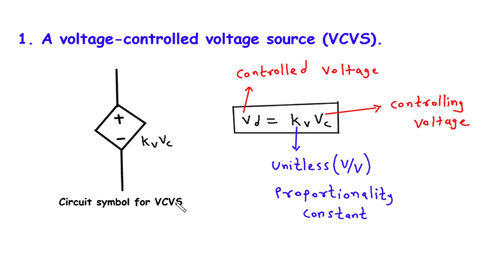To summarize, the voltage-controlled voltage source, VCVS, is a fundamental component in electronic circuits, allowing us to control voltages at different parts of a circuit based on the voltage at another part. By adjusting the proportionality constant K and manipulating the controlling voltage, we can precisely control the output voltage.